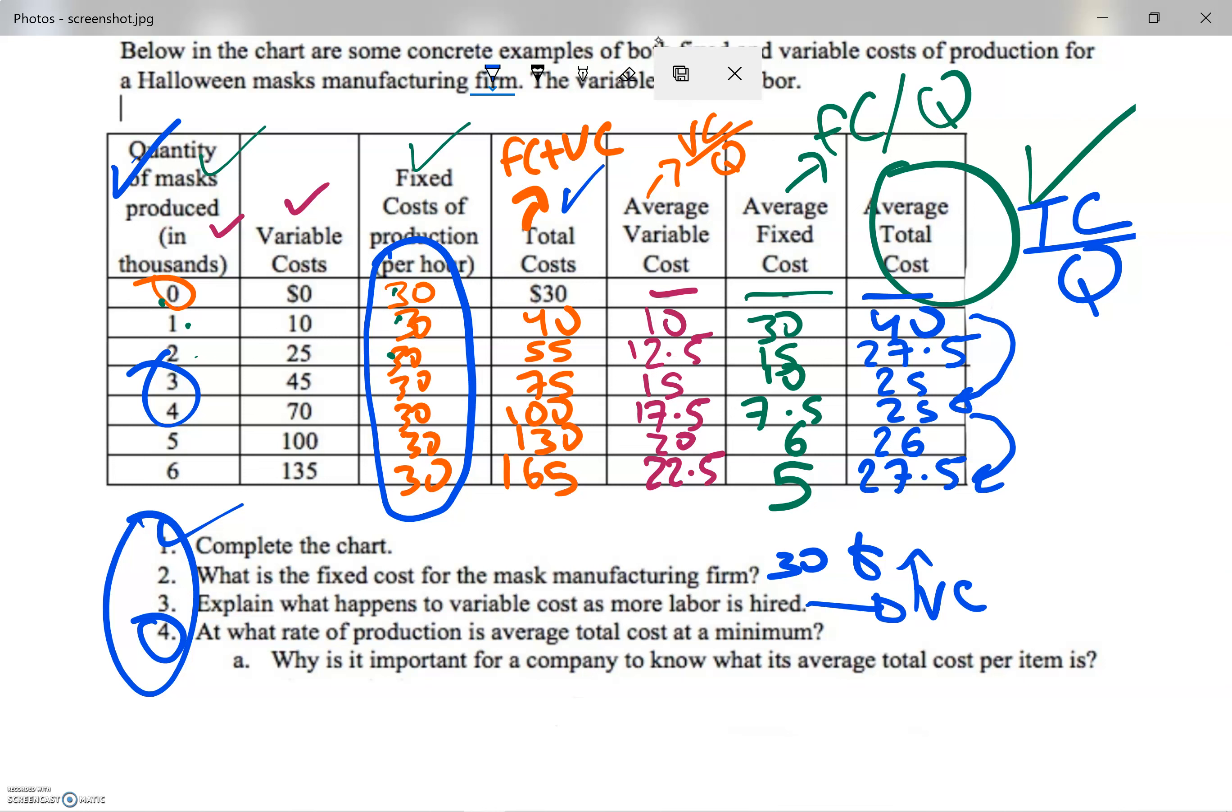So it wouldn't be good for me to produce nothing because no matter what, there will be a fixed cost that I need to pay. I need to pay the rent, I need to pay the loan installments and so on.